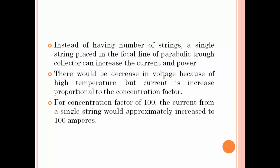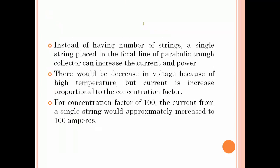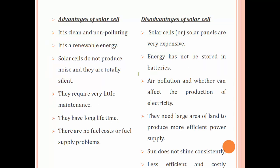In a concentrating array using a parabolic trough collector, the receiver pipe is placed at the focal length. Current increases because current is proportional to the concentration factor — the amount of solar radiation concentrated. For a concentration factor of 100, a single string can produce around 100 amps, compared to only 1.08 amps without concentration. This is what concentrating arrays are all about.